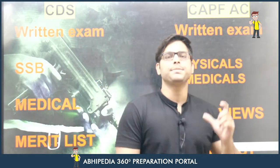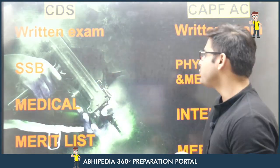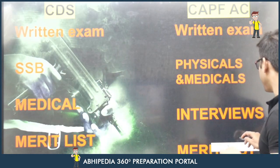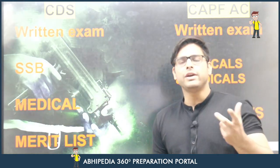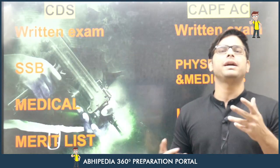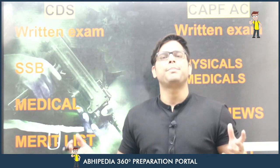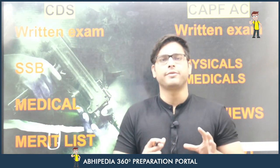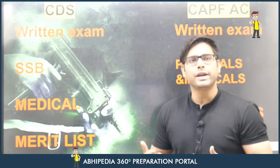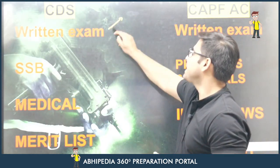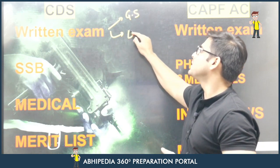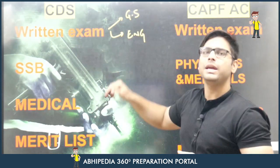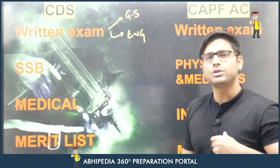Let's talk about the process. In CDS, you first appear for the written exam. In CDS you have two options: OTA and IMA, along with Air Force Academy and INA, which are for permanent commission, while OTA is short service commission. For IMA, there are three written papers; for OTA, there are two — General Studies and English. IMA also includes Mathematics. After qualifying the written exam, you appear for the SSB.